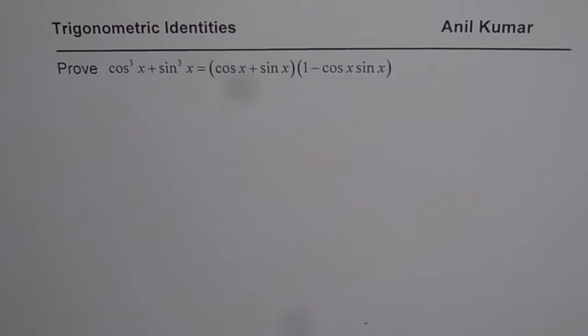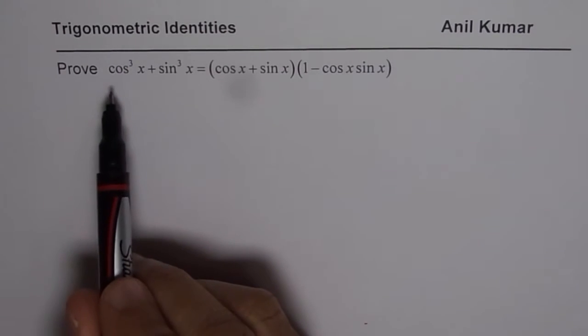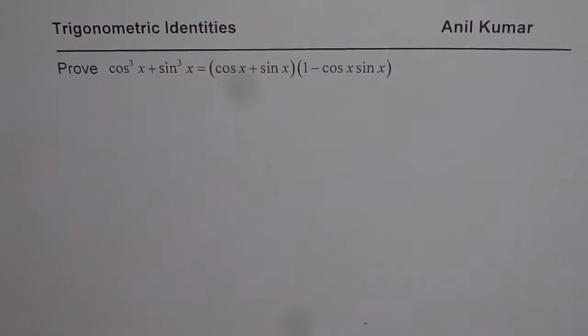I am Anil Kumar and now we will take a few trigonometric identities which will involve formulas with sum of cubes and difference of cubes. The question here is, prove cos³x + sin³x = (cosx + sinx)(1 - cosxsinx).